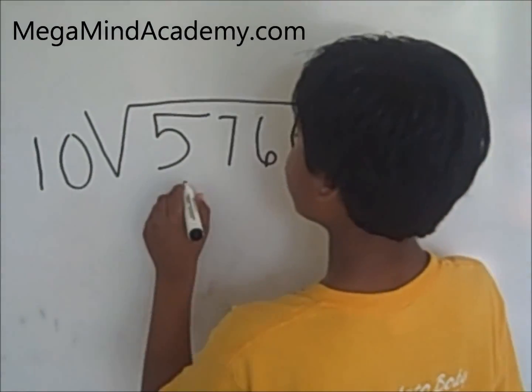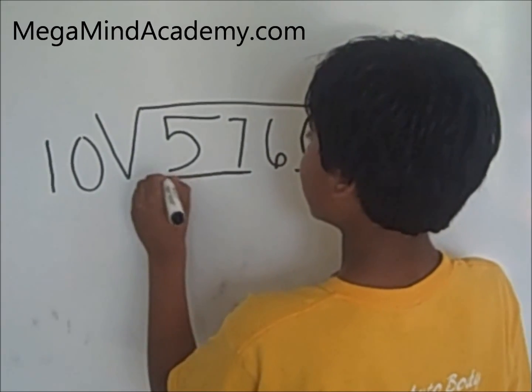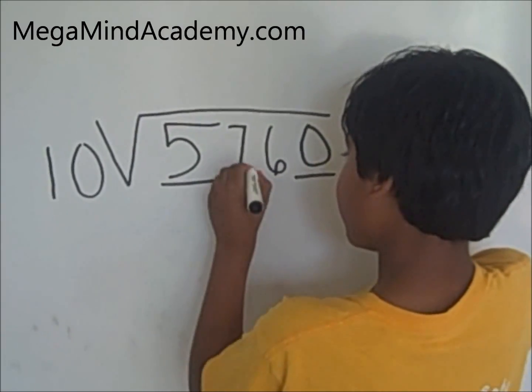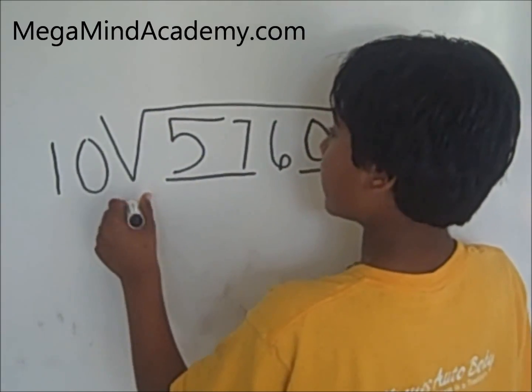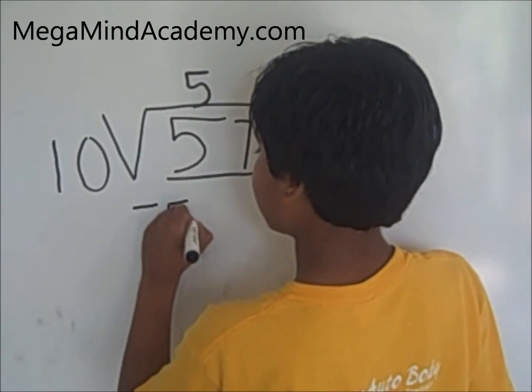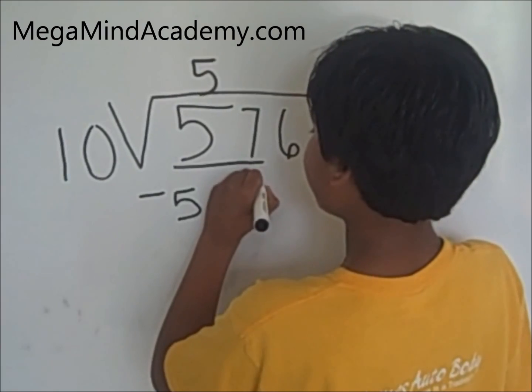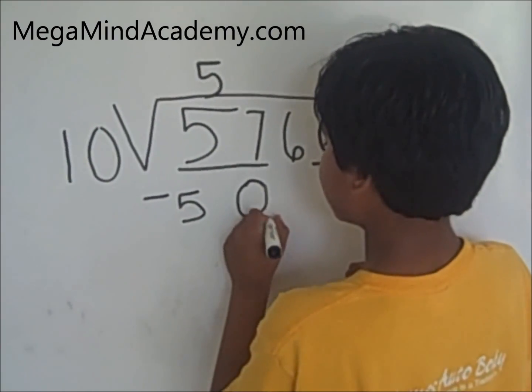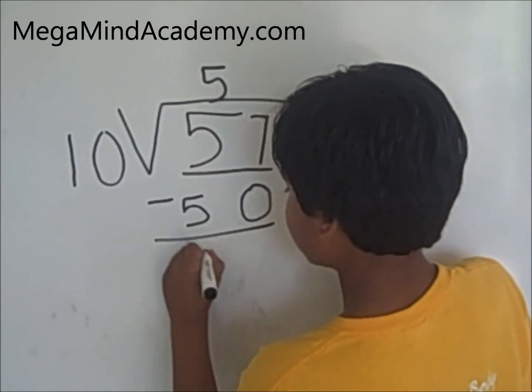5 is smaller than 10, so we have to pack the digits together. Now it's 57. 10 finds a 50. You subtract 50 from 57. That equals 7.